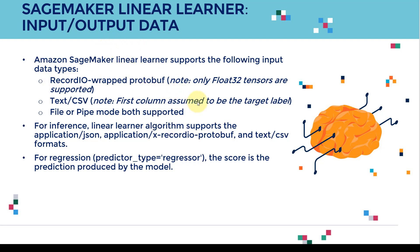Amazon SageMaker Linear Learner supports the following input data formats. First, you can use RecordIO — I'll show you how to convert your data into RecordIO format and upload it to S3. It only accepts float32 tensors. You can also use text and CSV data, but you have to make sure the first column is the target label. When you feed in training data, the first column must be your target, followed by your features.